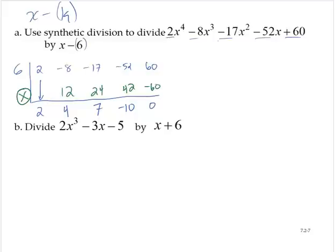Okay, so we had this 2x to the fourth minus 8x cubed minus 17x squared minus 52x plus 60, and we were dividing it by x minus 6. Now, if you think of the long division process, our first term would be an x cubed term, and we would go from there.